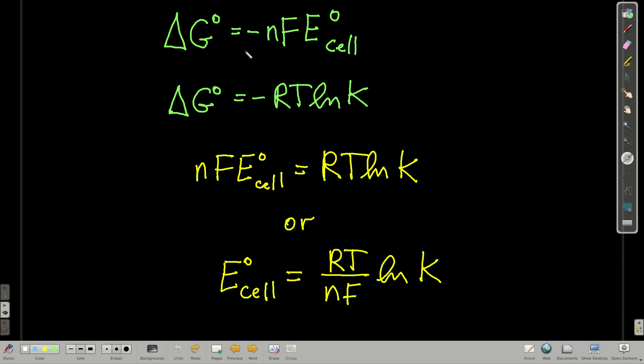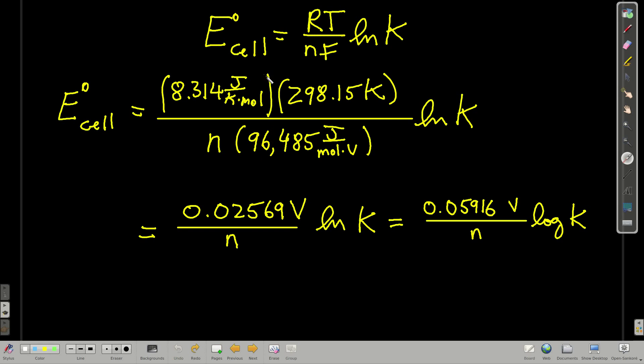We know we're going to now do a couple of examples where we use delta G equals negative nFE of the cell, and also this one here, the relationship between E of the cell and K. Before we do that, a lot of times you'll see it written like this. If you write E zero of the cell equals RT over nF, T is 298.15 Kelvin, R is 8.314, you know Faraday's constant. So if you put these numbers in, you get, it's basically a constant, 0.02569 volts over n, n is the number of moles of electrons transferred, ln of K.